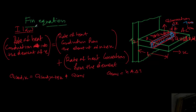Now we will see the fin equation. You can see the figure of a fin here. There is a fin having a length L, base temperature T0, and the direction X along the length of the fin. This is Q conducted at X, Q conducted at X plus delta X, and this is the area of cross-section, marked in red. This is the width of this small element, delta X, and this is the perimeter.